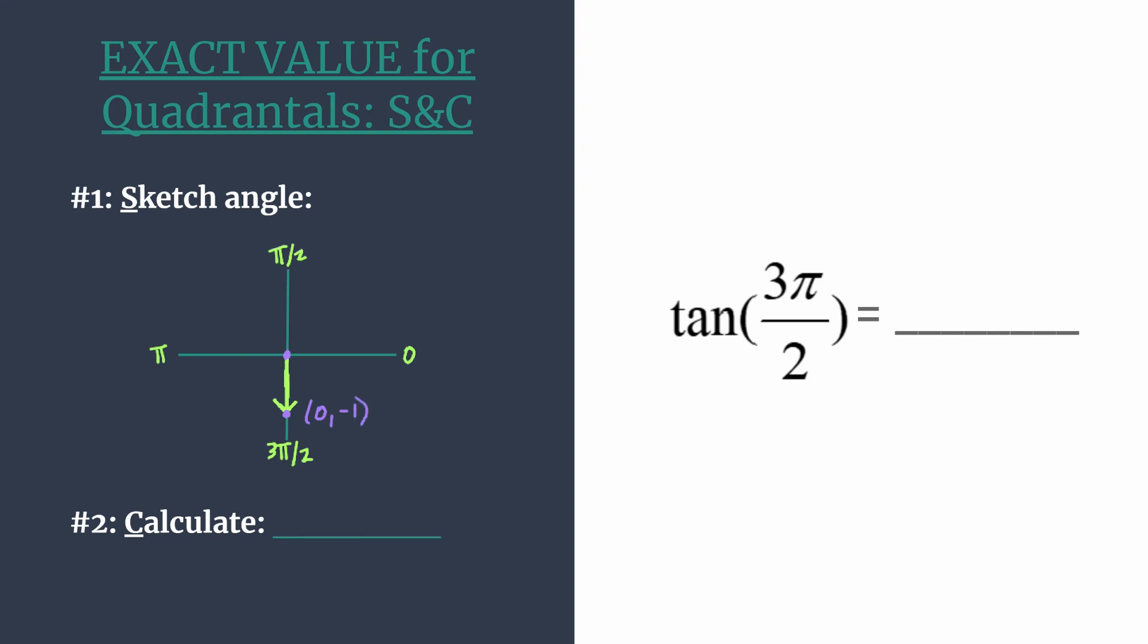Now we can calculate the trig ratio we want, the tangent. The tangent of an angle on the unit circle is calculated by the ratio y divided by x. So if we try that calculation, we have our negative 1 as y divided by 0, that's our x. Here we have a big red flag - of course, we can never divide by 0.